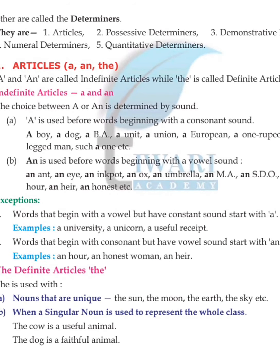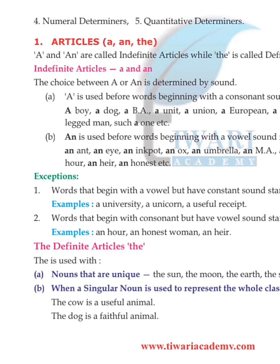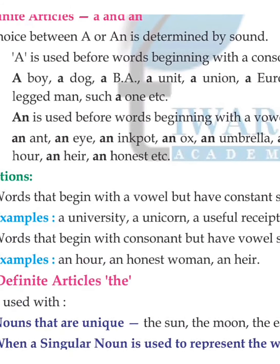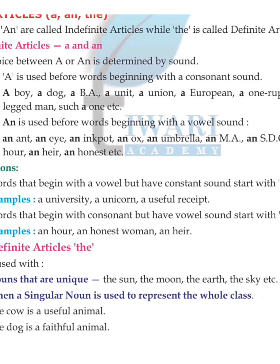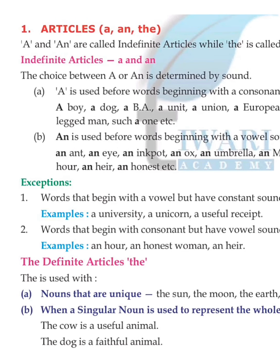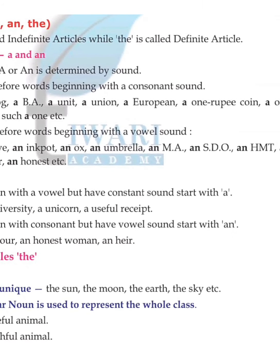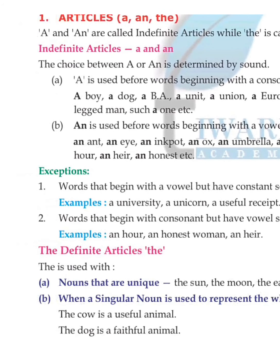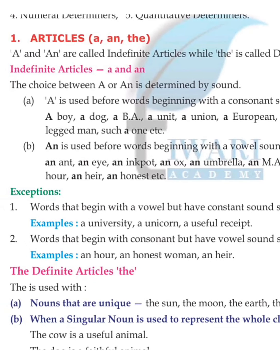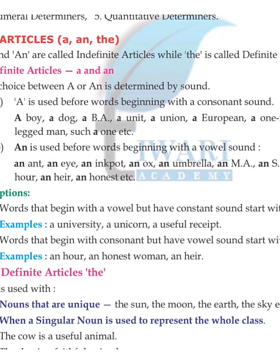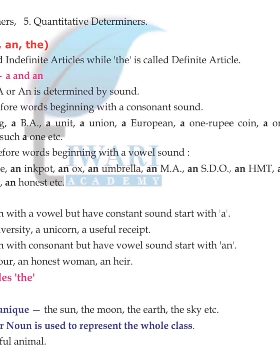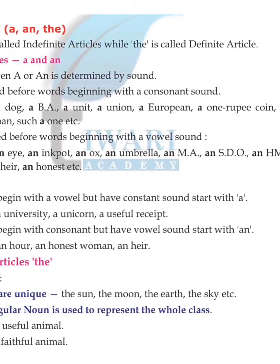'A' is used before words beginning with a consonant sound: a unit, a union, a European, a one-rupee coin, a one-legged man. 'An' is used before words beginning with a vowel sound, like: an aunt, an I, an import, an ox, an umbrella, an HMT, an hour, an honest, etc. The starting vowel sound determines the use of 'an'.